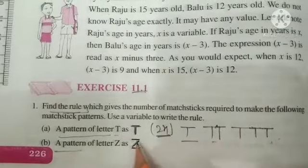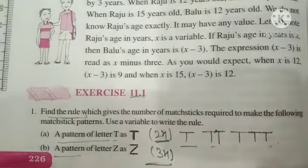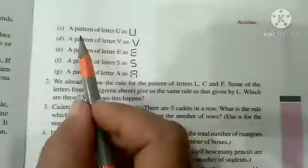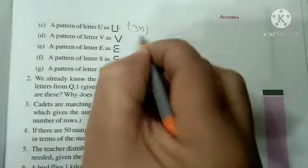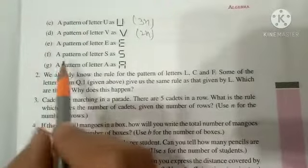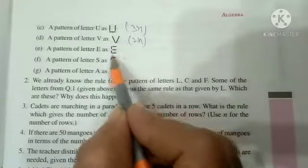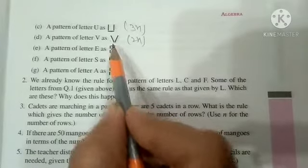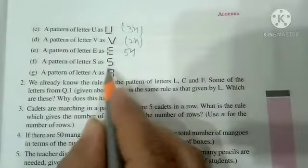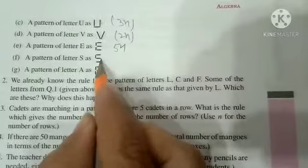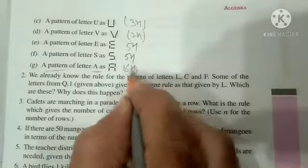Next, there is a pattern for letter Z: count the matchsticks — 1, 2, 3 — so the rule is 3n. For letter U, count the matchsticks: 1, 2, 3 — also 3, so the rule is 3n. If there are 2 matchsticks, then it is 2n. For part E, the rule will be 6n.